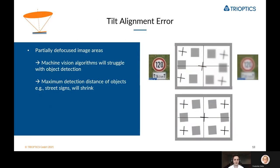Let's look at one or two of these degrees of freedom. Looking at tilt: what happens when there's a tilt alignment error? As you can see on the right, there will be a partially defocused image area on the right-hand side. You might perceive objects like a street sign as a little more blurry than on the left-hand side where the image is in focus. This will lead to your machine vision algorithms struggling with object detection for those traffic signs.